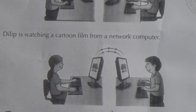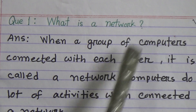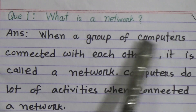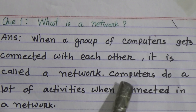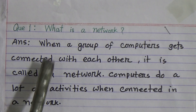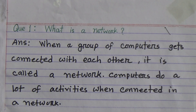So dear students, the answer to question number 1 from Chapter 8 — what is a network — is: when a group of computers gets connected with each other, it is called a network. Computers can also do a lot of activities when connected in a network.